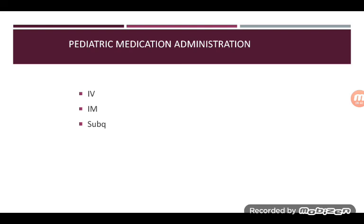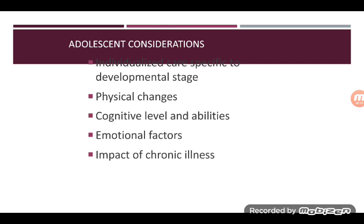For infants, the vastus lateralis is the injection site used. The ventrogluteal can then be used in older children. Children may prefer sub-Q injections in the leg or upper arm rather than the abdomen. Many are still in a developmental stage where they think their body will bleed out from a tiny bit of blood, so sometimes the less they can see, the better.